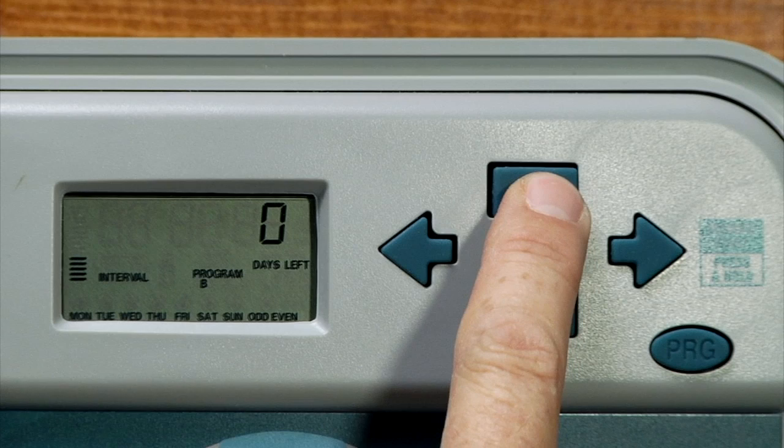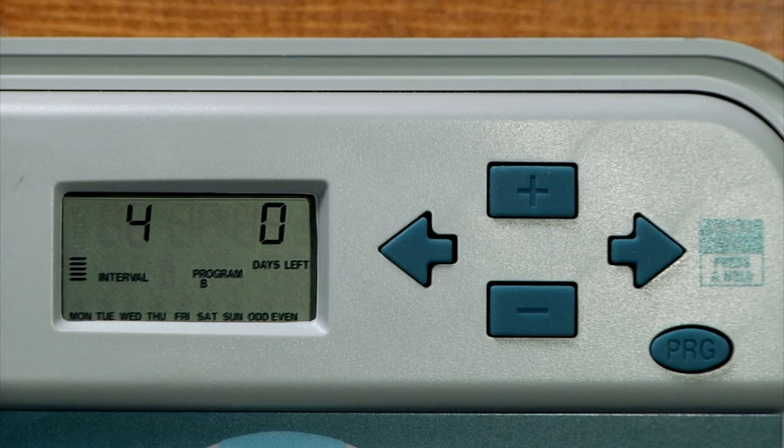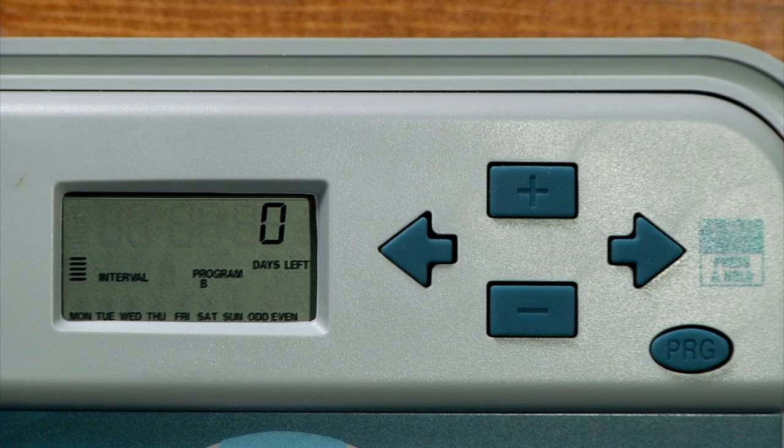If we use the plus button to go above two or three or four or five days—four days, for example—it also gives us a days left feature. Days left will be how many more days before that four-day interval starts, in this example.